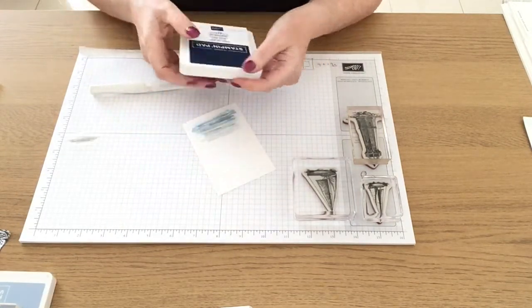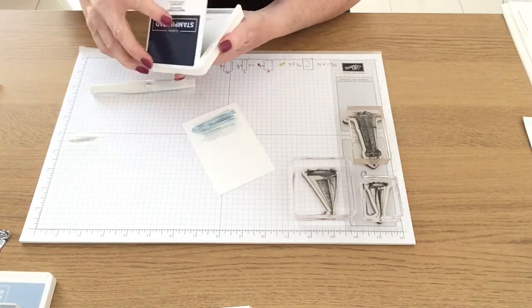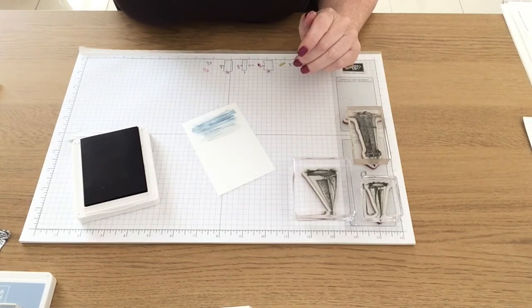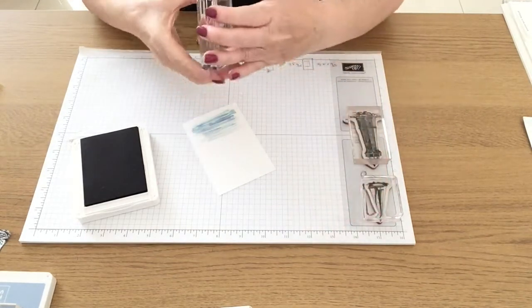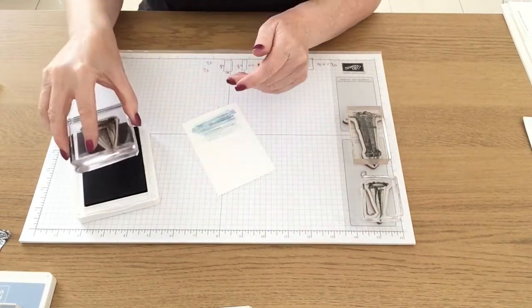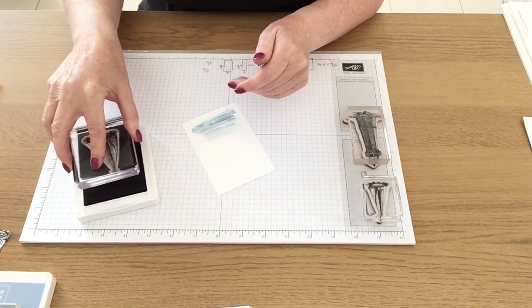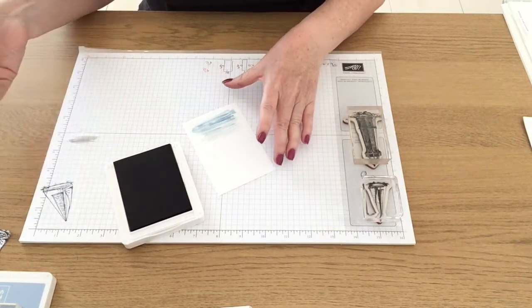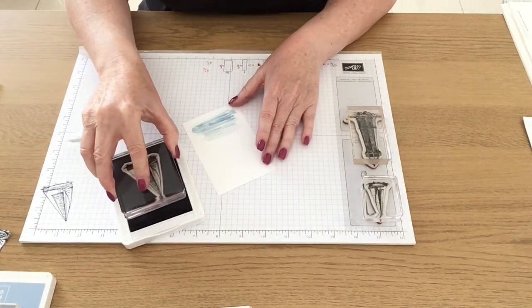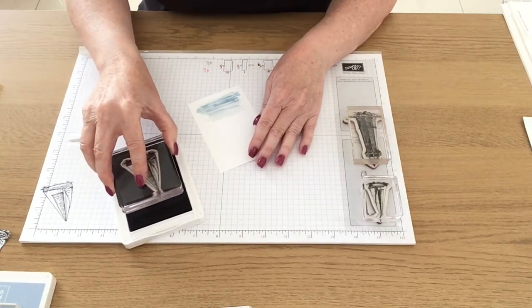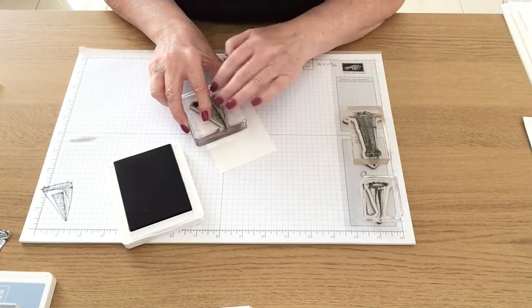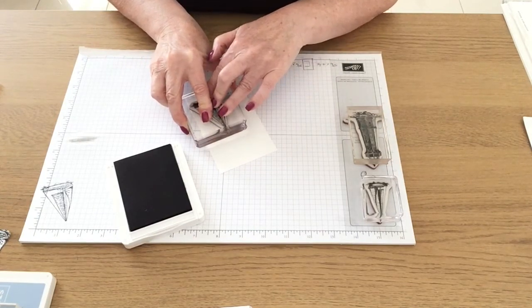So now I'm going to use some Knight of Navy and I'm going to stamp up the boat, the bigger of the two in the set. I'm just going to ink this up gently, I'm going to stamp it off just to see how it looks because this is the first time I've used the set and I'm now going to stamp it over the balmy blue colour wash.